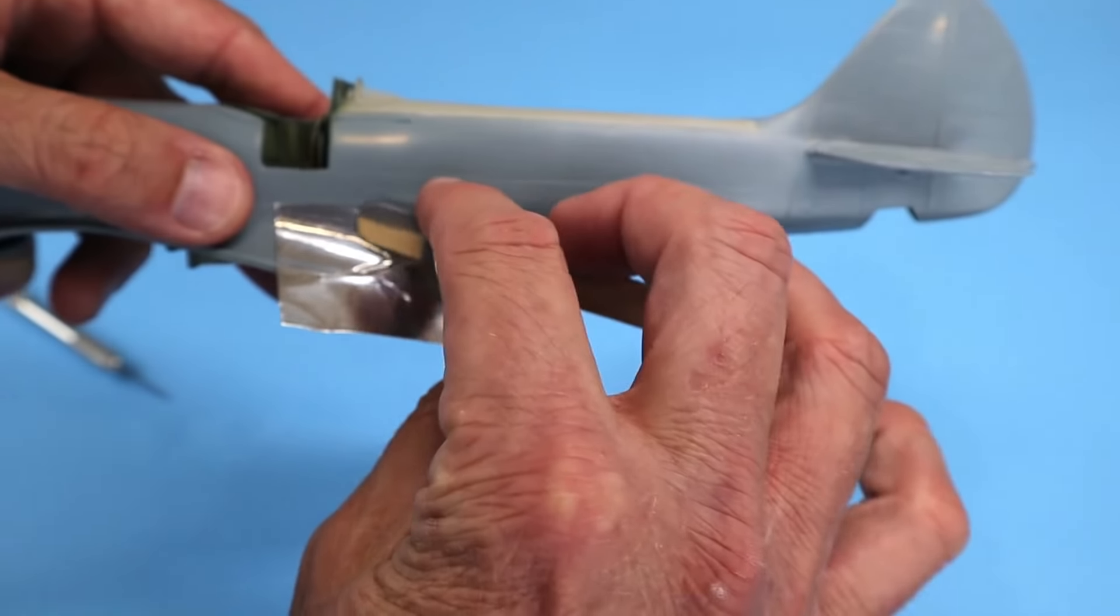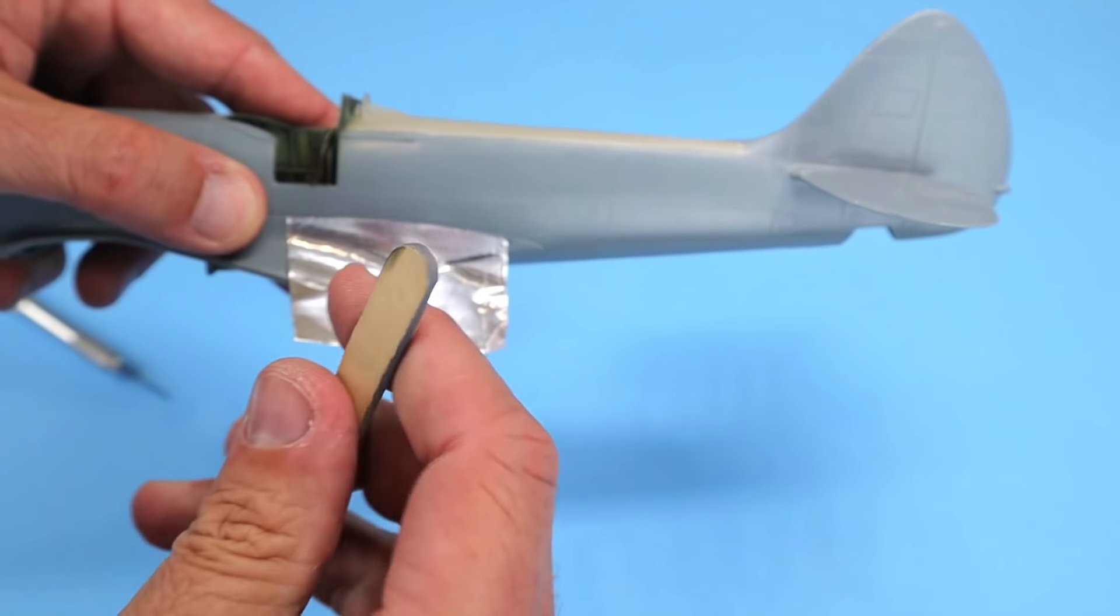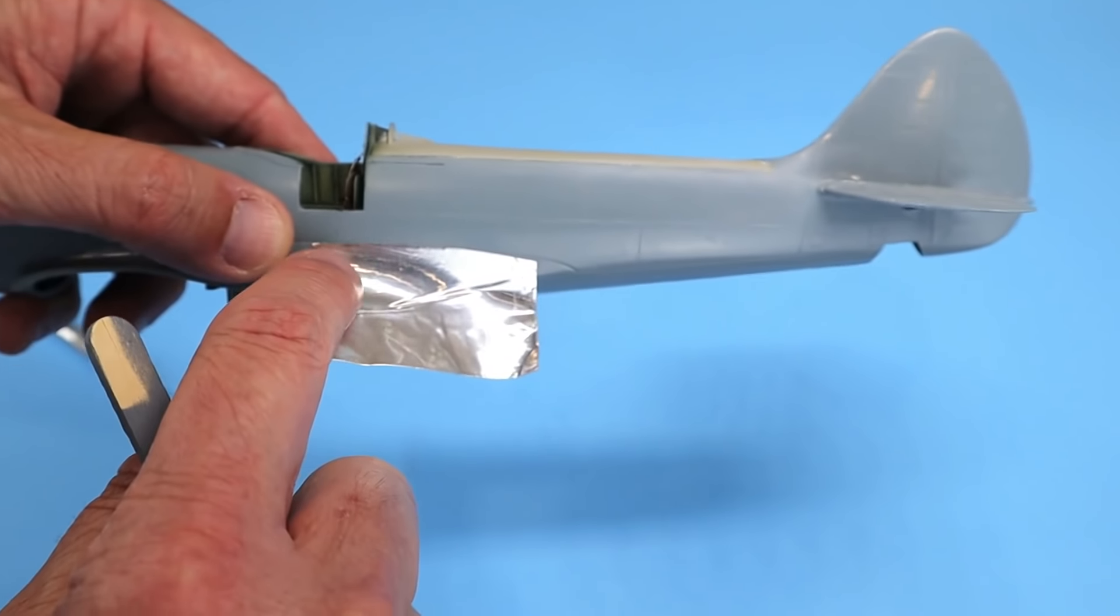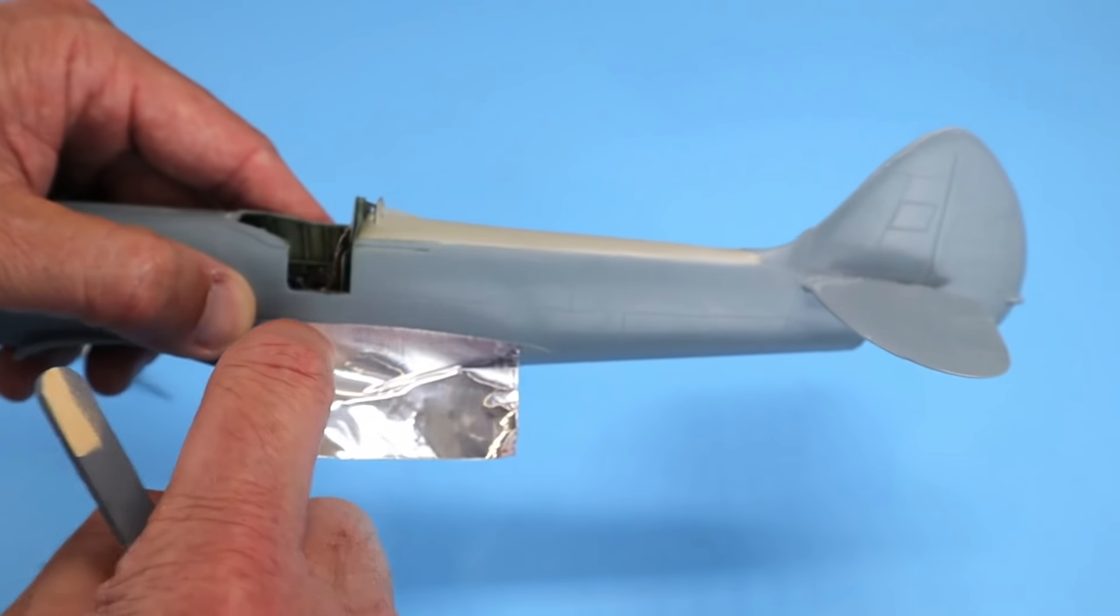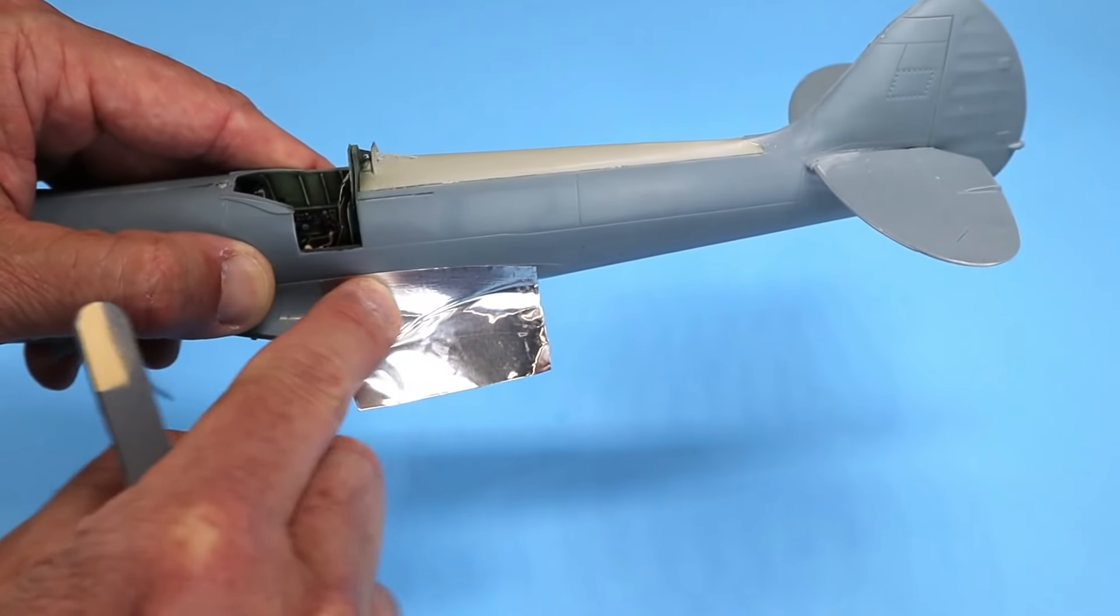Now you want to be careful; you don't want to use any sharp cornered or edged object kind of like this, because you'll put little scratches or grooves into the base material. You want to avoid that. So once you have it burnished down, you can see here this metal actually stretches a little bit over the compound curves of this wing fillet area.